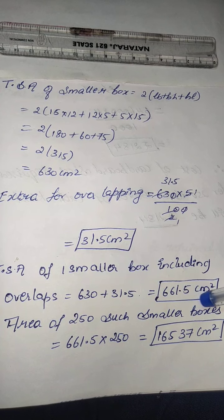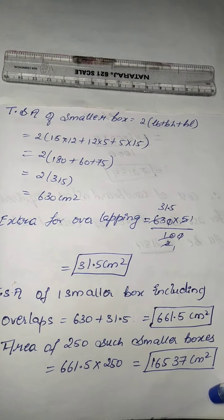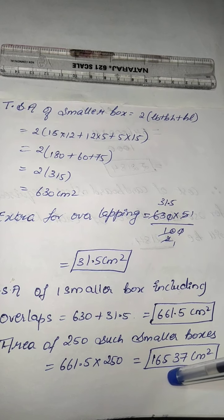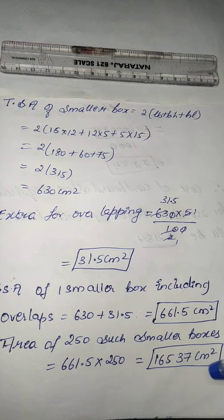So totally there are 250 boxes, children. So multiply with 250, so it becomes 165,375 centimeter square.